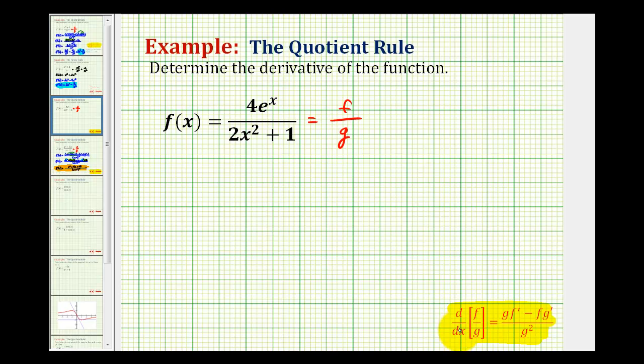So the derivative of the quotient of f divided by g is equal to g times f prime minus f times g prime divided by g squared. So now let's go ahead and apply the quotient rule.